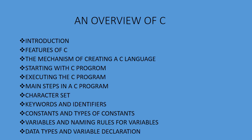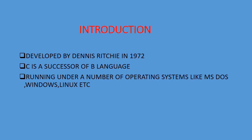Hello children, now we are going to discuss an overview of C. The following topics will be covered in the lesson: introduction, features of C, the mechanism of creating a C language, starting with a C program, executing the C program, main steps in a C program, character set, keywords and identifiers, constants and types of constants, variables, naming rules for variables, data types, and variable declarations.